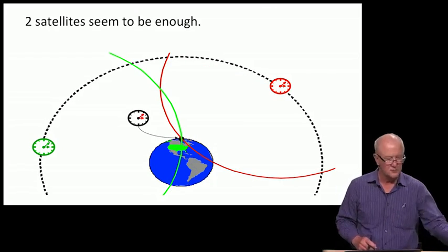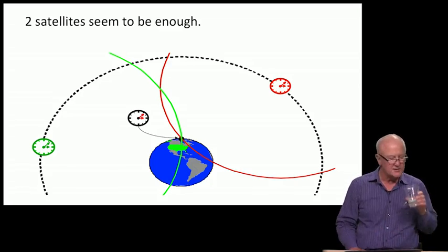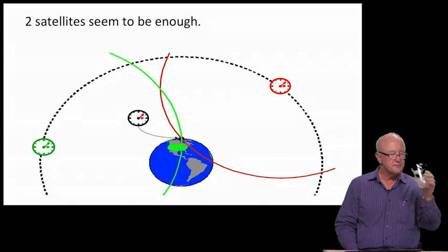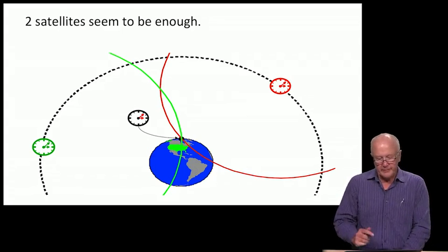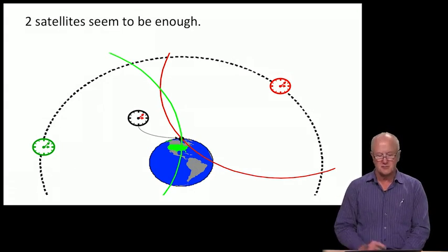Let's make such a measurement to another satellite. Here we're doing exactly that—green is the second satellite, red is the first satellite.